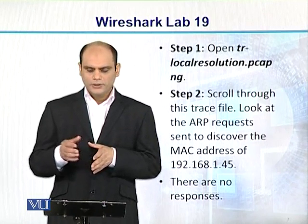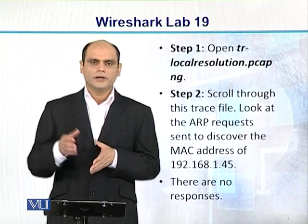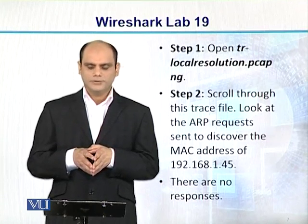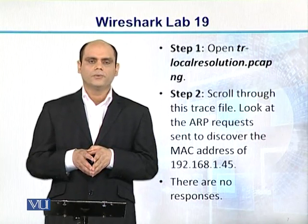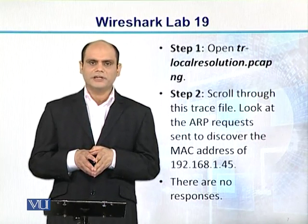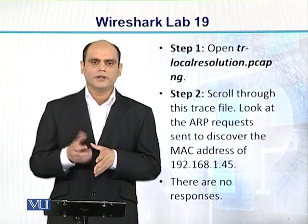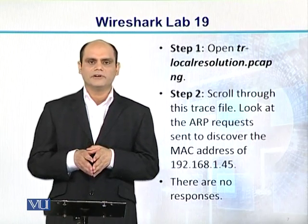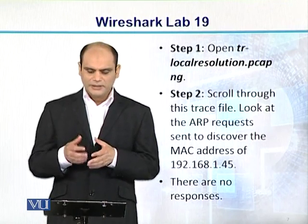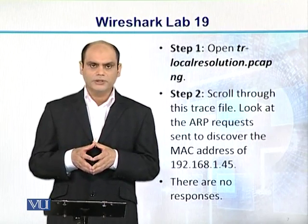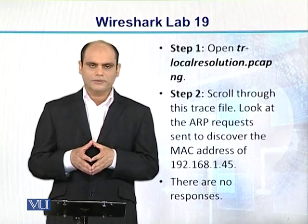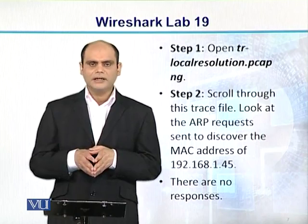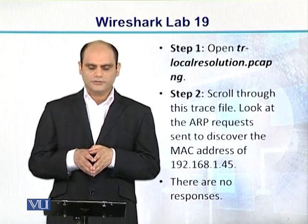Step number 2: we have to work with the trace file. Is trace file ko scroll karein aur ARP request sent to discover the MAC address of 192.168.1.45 ko dekhein — hum us IP address ke against jo MAC address hai uska determine karna chahte hain. Jab humne further analyze kiya, to there are no such responses.